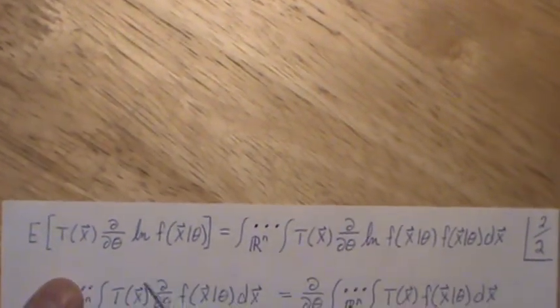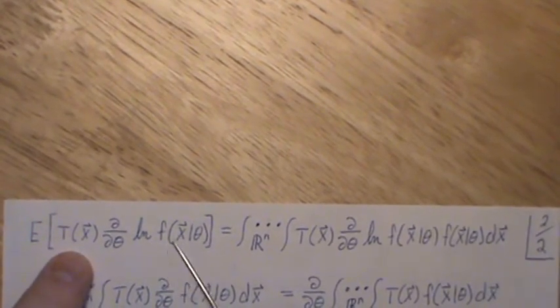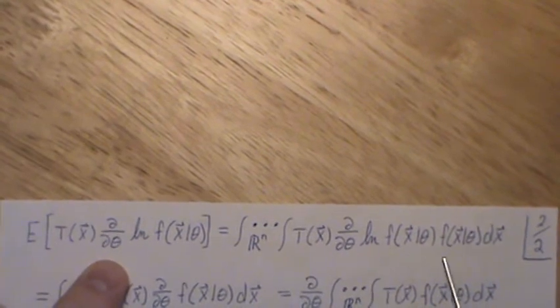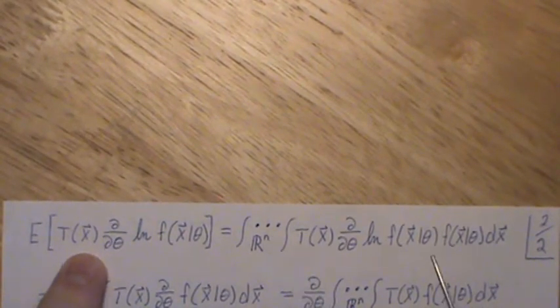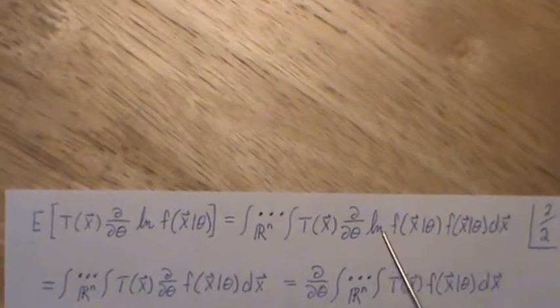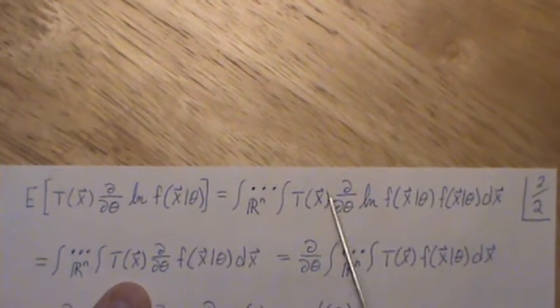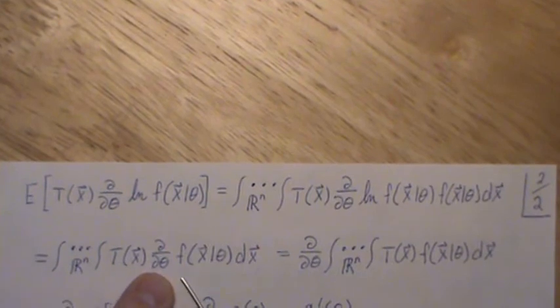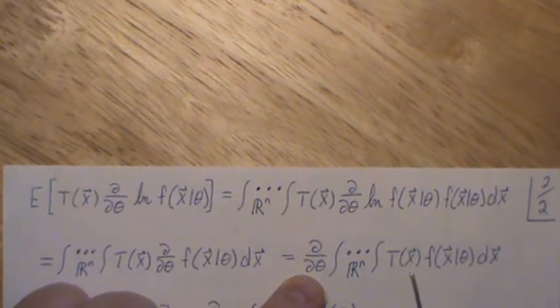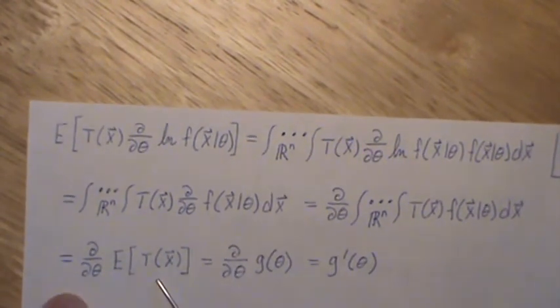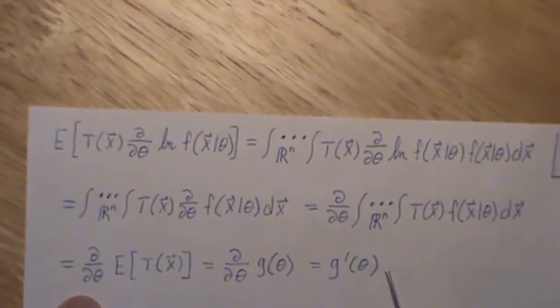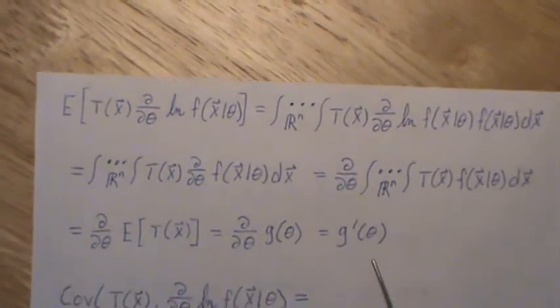Now let's look at the expected value of this product. We have our estimator times this derivative of the log likelihood. Now, that expected value means take this quantity, which is here, times its density, the X's, integrate over all possible values. But again, the derivative of the log is one over f, which then will cancel with that. And we're left with the derivative of f of x, which is this. Everything else is the same, except for this piece. Now, under regularity conditions, we can pass that derivative outside the integral. But this is the expected value of t of x. Well, we know it's unbiased, so this piece has to equal g of theta. And then if we take the derivative of g of theta, then we'll just generically call it g prime of theta.